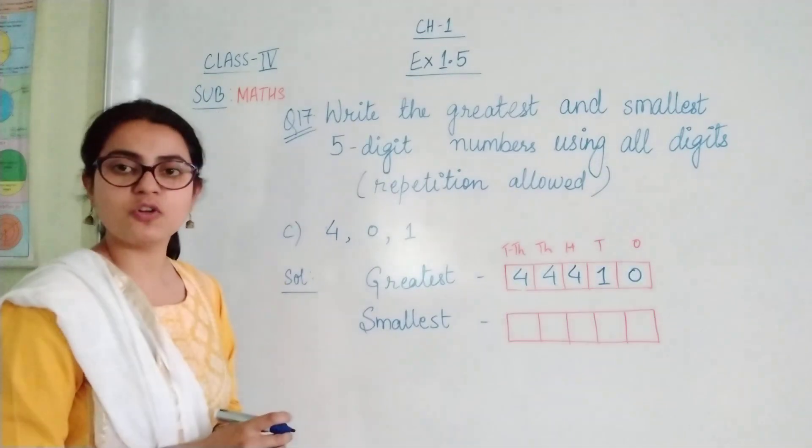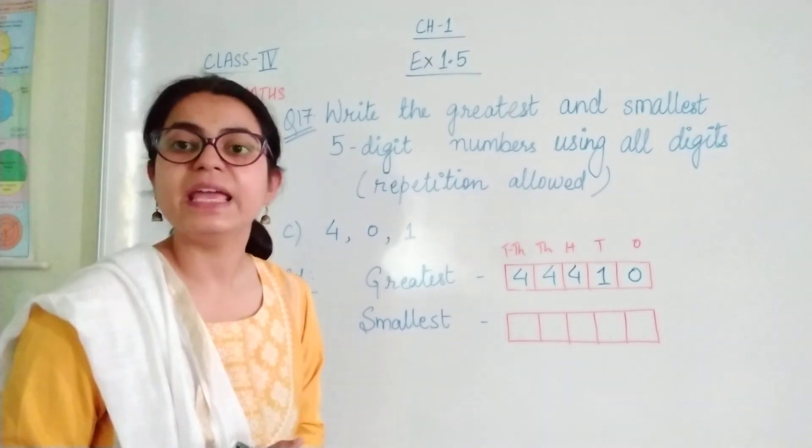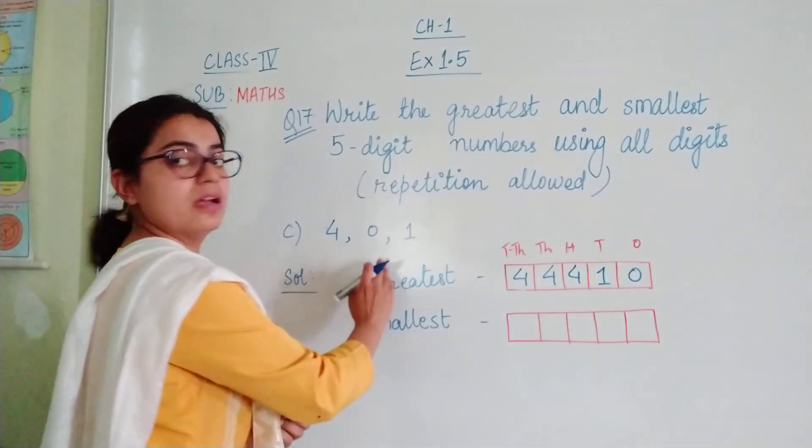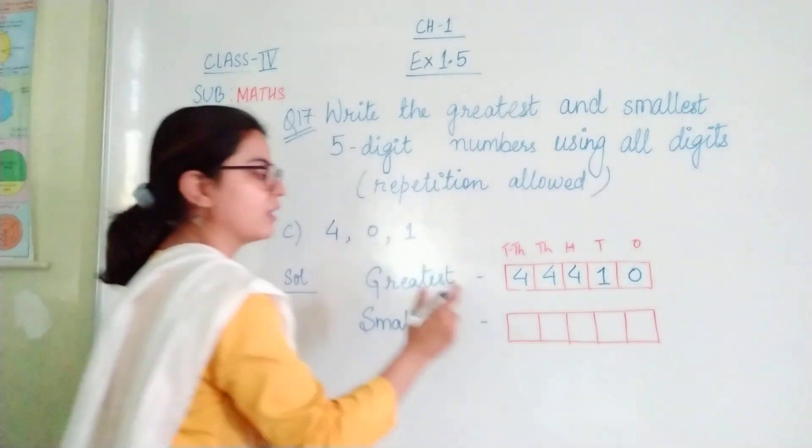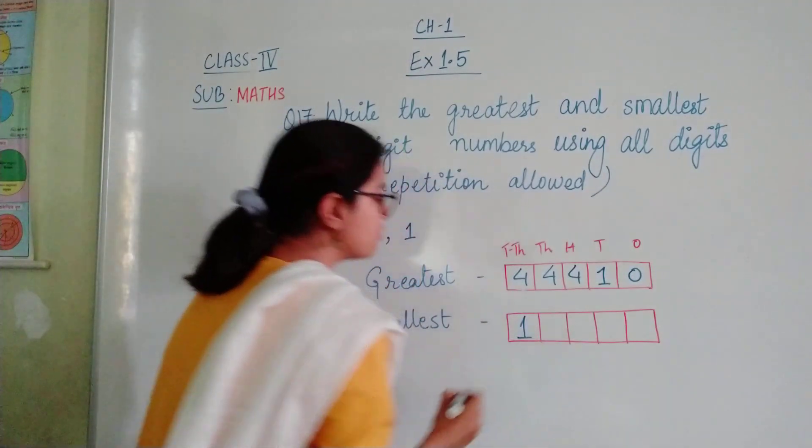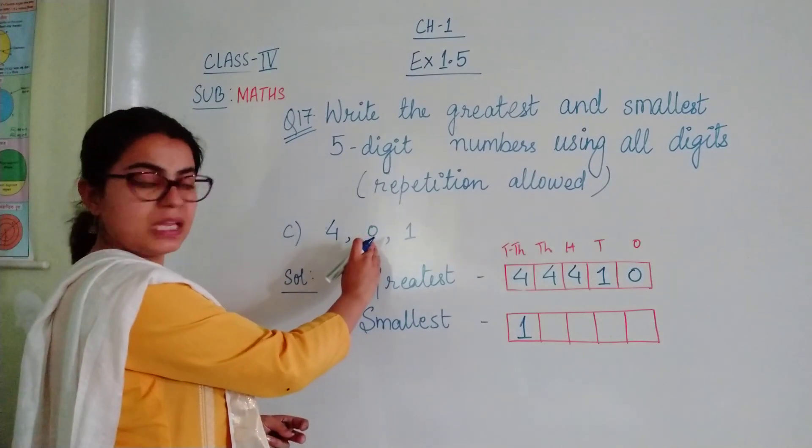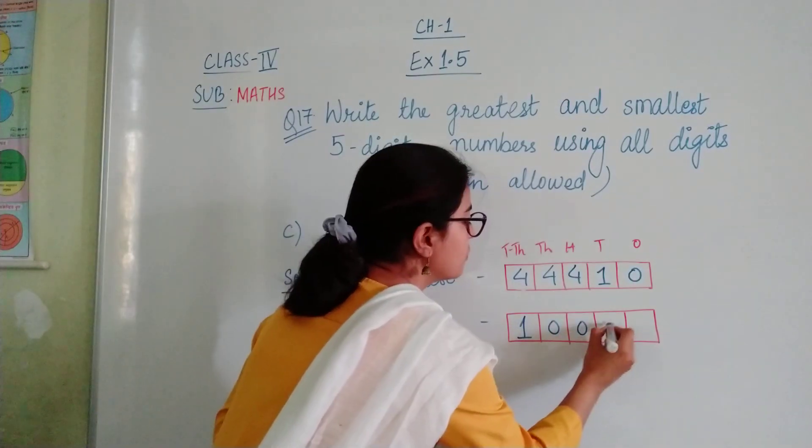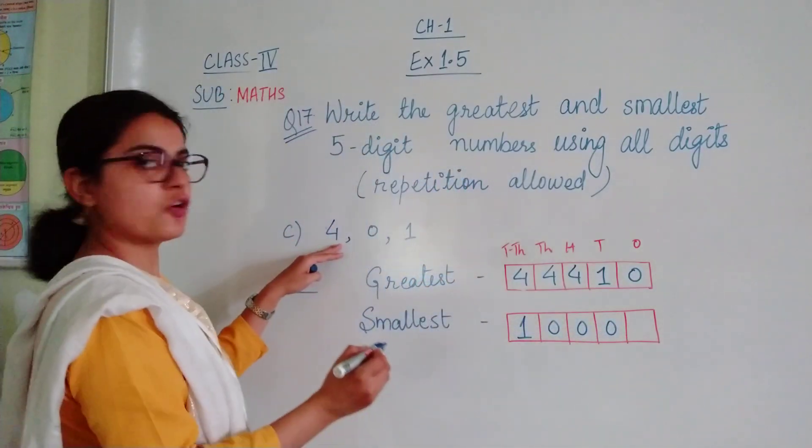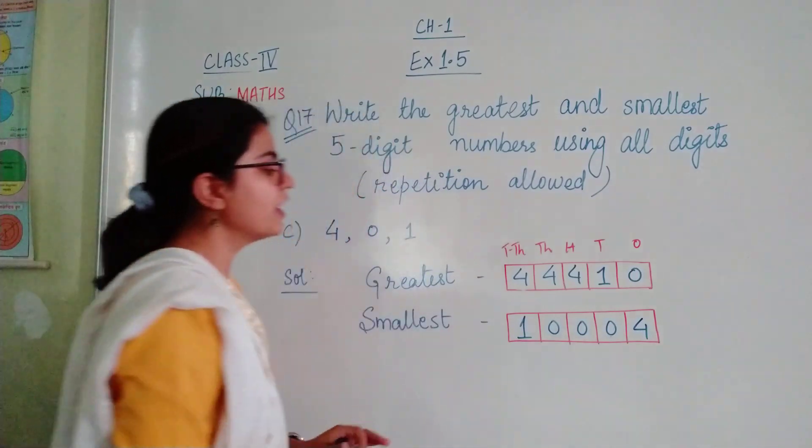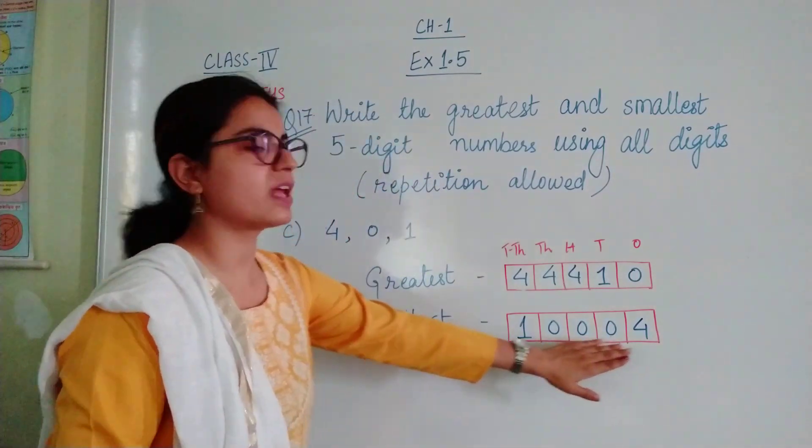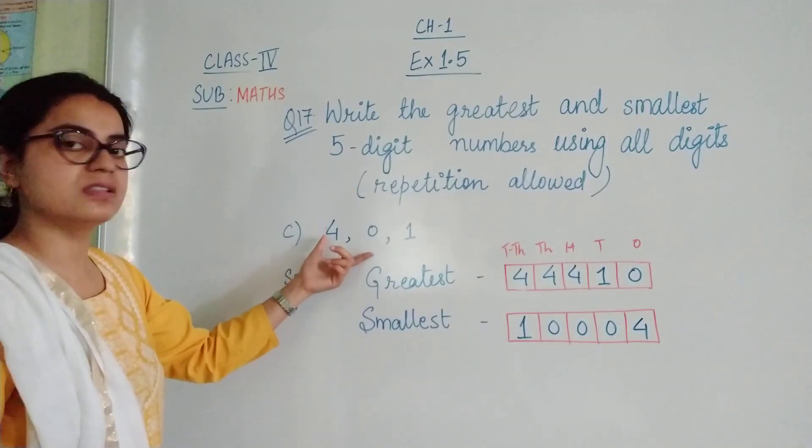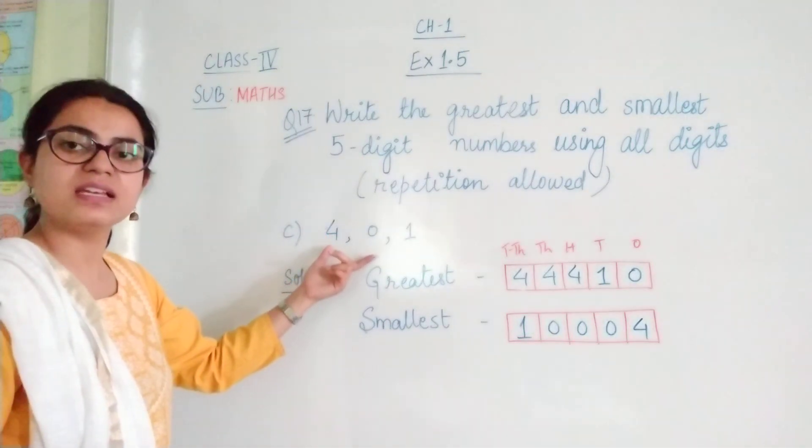So what do we have to do? We have to write 0s in between. We first write the number which is bigger than 0 which is 1 at the highest place values. Then we can repeat 0. How many times? 3 times. 1, 2, 3. Followed by the greatest number. So we have 10004 as the smallest 5-digit number formed with these 3 digits.